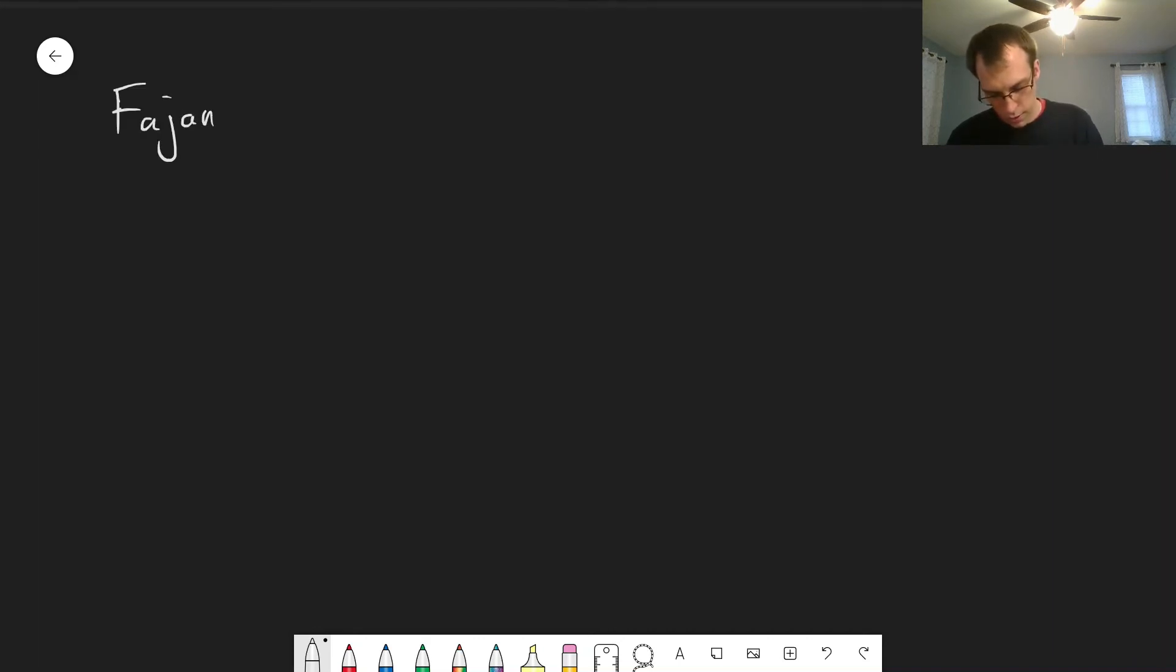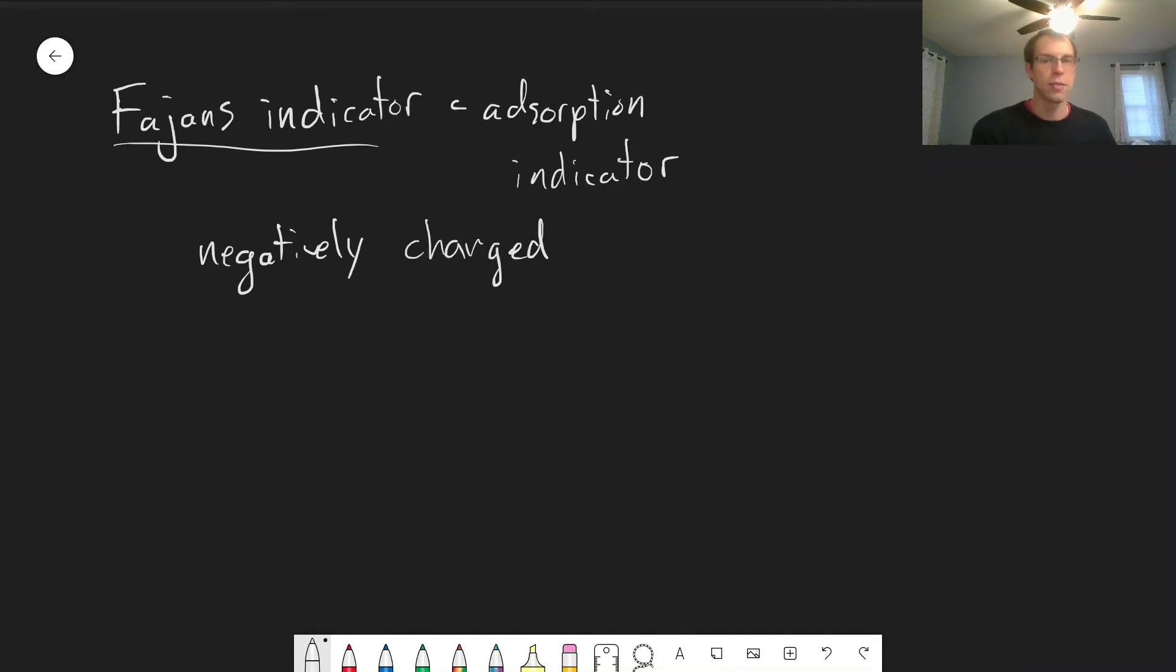Another type of indicator is what's called a Fajans indicator. And this is what's known as an adsorption indicator. So what happens, this is a negatively charged species. And prior to the equivalence point, as our precipitate is forming, it is slightly negatively charged because of the excess chloride or whatever anion is in solution.